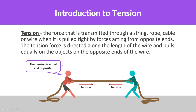Alright everyone, welcome back. We're doing tension today. Tension is the force that is transmitted through a string, rope, cable, or wire when it's pulled tight by forces acting from opposite ends. The tension force is directed along the length of the wire and pulls equally on the objects on the opposite ends of the wire. It's a little bit confusing language, but as we do these problems it should make more sense.